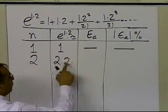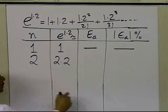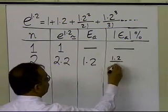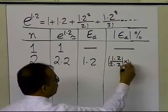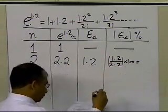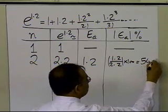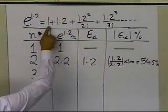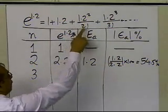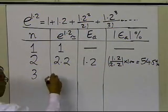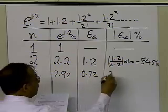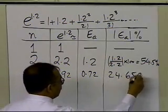For two terms, the approximate error will be the difference between the present and previous approximation, which is 1.2, and the absolute relative approximate error will be 1.2 divided by the present approximation times 100, giving 54.5%. If I choose three terms — 1 plus 1.2 plus 1.2 squared divided by factorial 2 — I get 2.92, my approximate error is 0.72, and my relative approximate error is 24.658%.